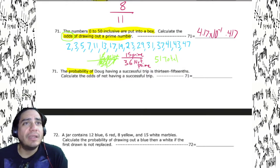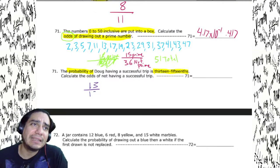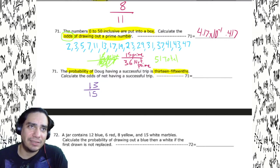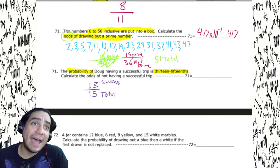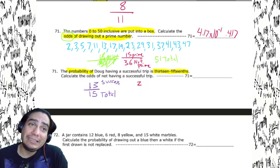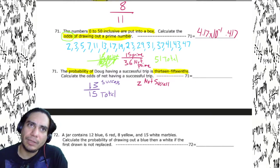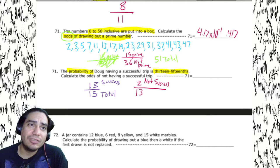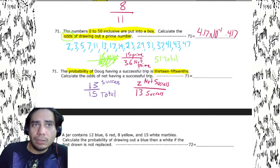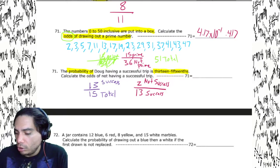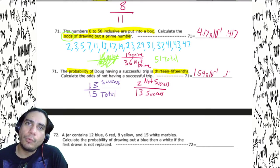The probability of Doug having a successful trip is 13 out of 15. Calculate the odds of not having a successful trip. Success is 13, total is 15, so not success is 15 minus 13 equals two. The odds of not successful: two not-happening over 13 happening. Two divided by 13 gives 1.54 times 10 to the negative first, or 0.154.